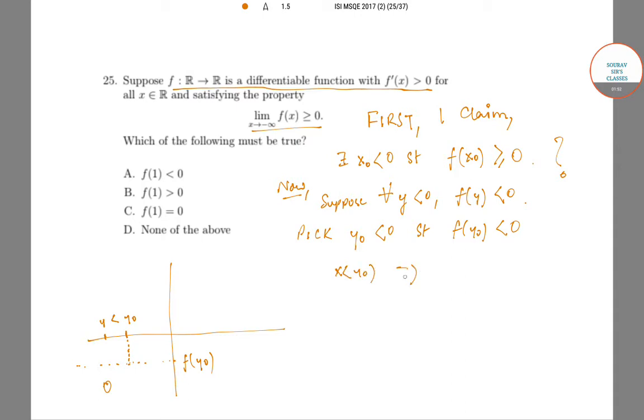Therefore limit as x going to minus infinity f(x) can never be 0 because it is bounded above by f(y₀).